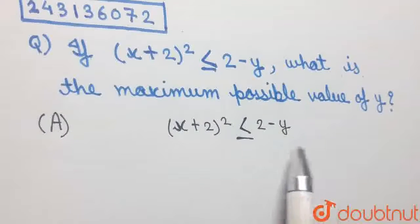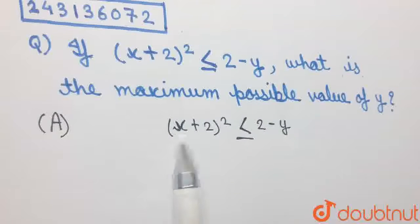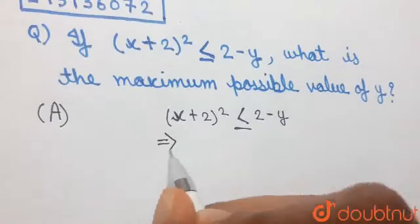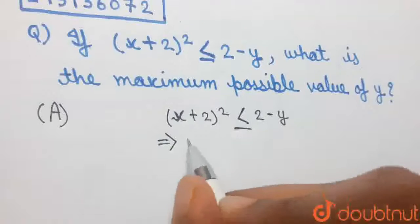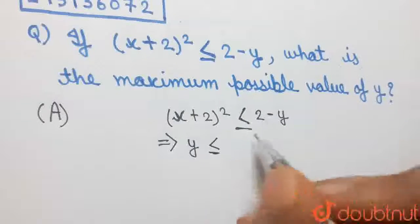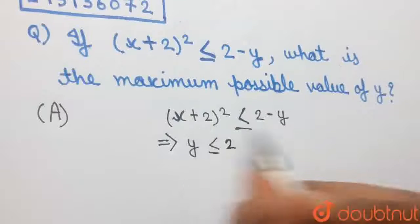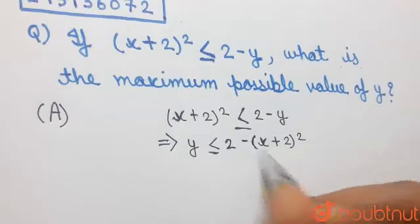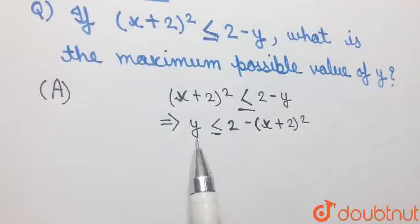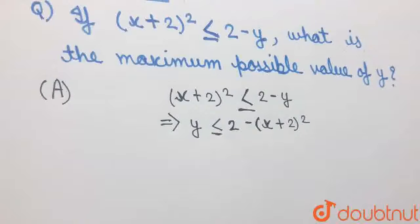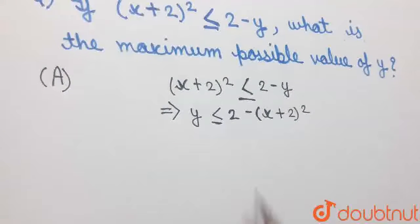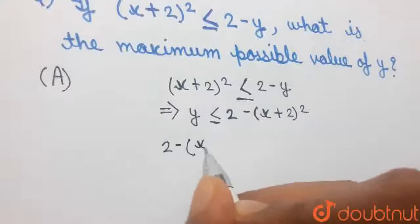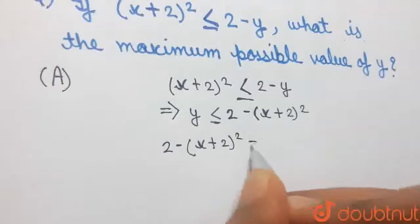In this inequation, if we take minus y to the left-hand side and (x + 2)² to the right-hand side, then on the left-hand side we will be left with plus y, and we have y ≤ 2 − (x + 2)². Let us represent the right-hand side term, 2 − (x + 2)², by f(x).